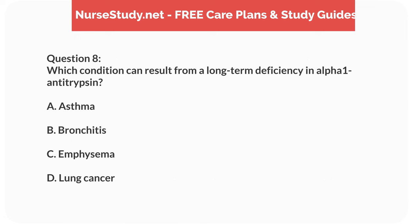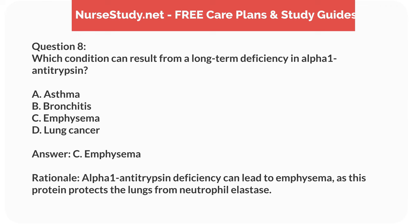Question 8. Which condition can result from a long-term deficiency in alpha-1-antitrypsin? A. Asthma. B. Bronchitis. C. Emphysema. D. Lung cancer. Answer: C. Emphysema. Rationale: Alpha-1-antitrypsin deficiency can lead to emphysema, as this protein protects the lungs from neutrophil elastase.